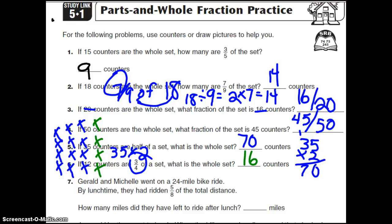Gerald and Michelle went on a 24-mile bike ride. By lunchtime, they had ridden 5/6 of it. So we need to figure out 5/6 of 24. This first part should be kind of a review because we've talked about it. So 24 divided by 6.